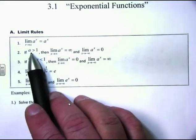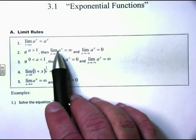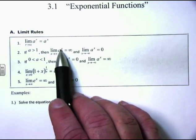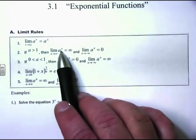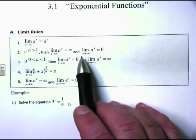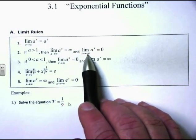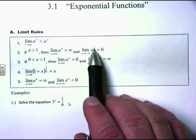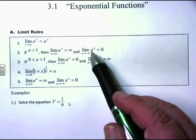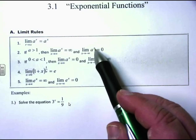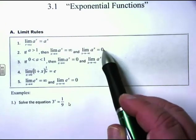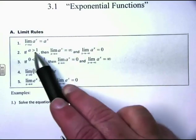If a is greater than 1 and we take the limit as x approaches infinity of a to the x, we have a base bigger than 1 raised to infinity. Since a power means multiplying that many times, a number bigger than 1 multiplied infinitely goes to infinity. However, the limit as x approaches negative infinity of a to the x is a to the negative infinity, which equals 1 over a to the infinity, and 1 over infinity goes to 0.